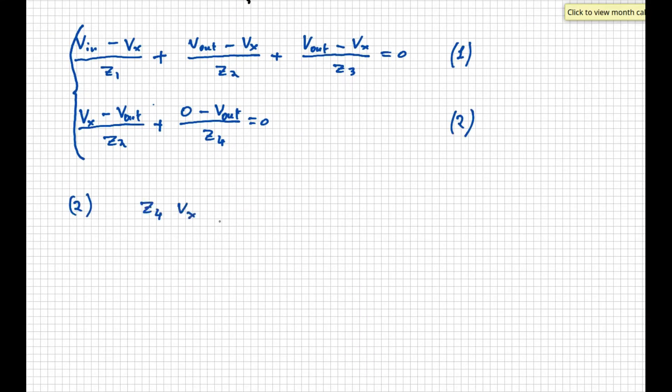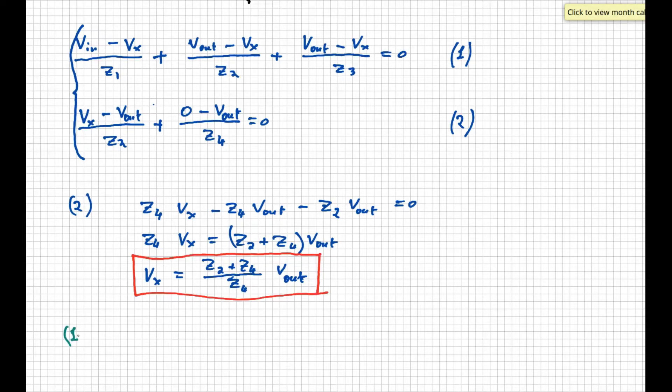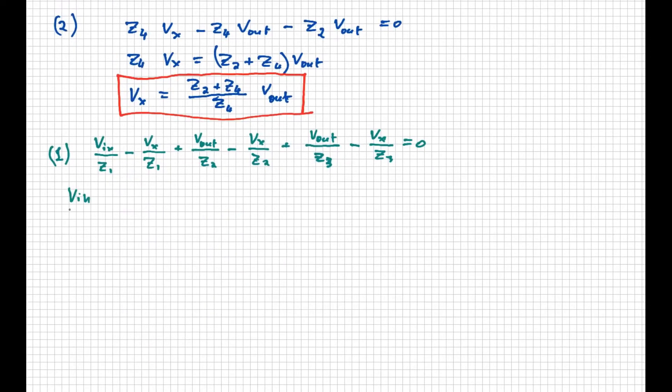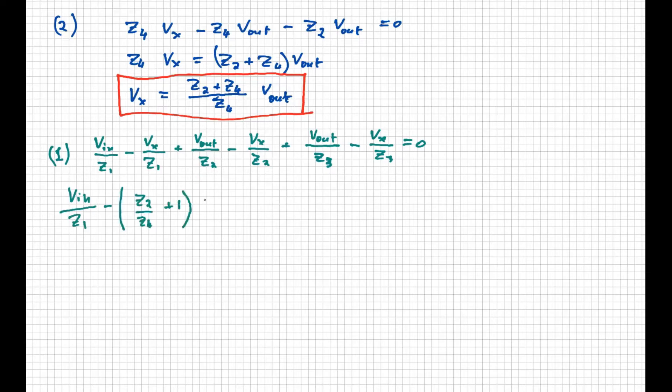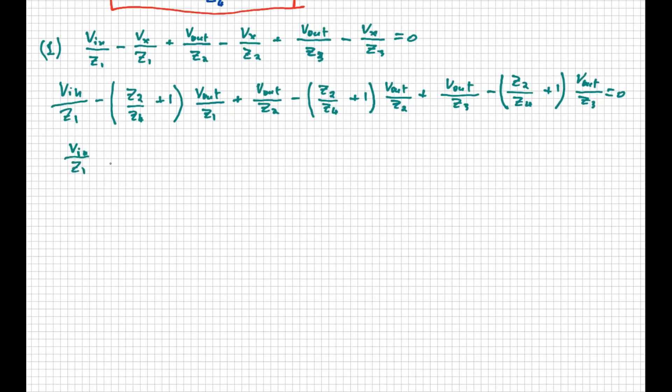Now we can manipulate the second equation to extract Vx, and we can also rewrite the first equation this other way. Now we can put together the two equations, replacing the Vx in the second equation with the value found from the first equation. Some more manipulations to make the equation easier to understand, and we obtain the transfer function of the filter in the schematic.